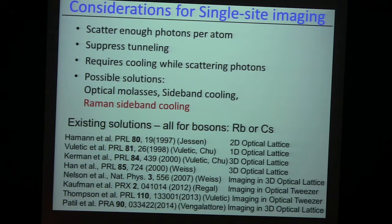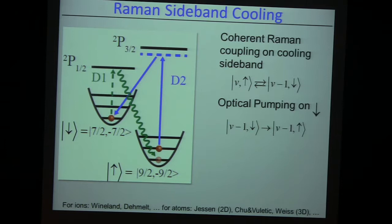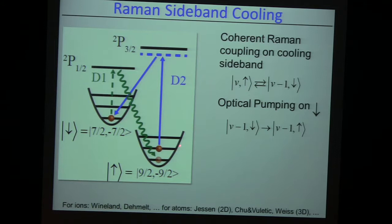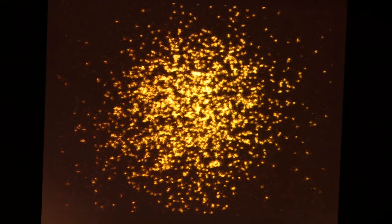Our choice for the potassium atom was Raman sideband cooling, which had not been demonstrated for potassium before. We felt it would be the best choice because potassium has an awkward electronic level structure which doesn't allow easy molasses cooling. In Raman cooling, you sit as an atom in a well of the optical lattice with many harmonic oscillator states. You coherently connect it to a lower quantum of vibration in another spin state, then optically pump the atom back — and it ends up in the lower vibration quantum state with high probability. So you have cooled one vibration quantum, and you keep going.